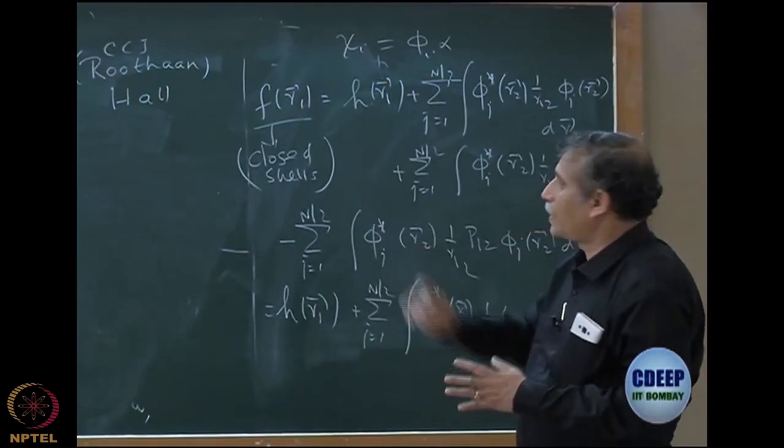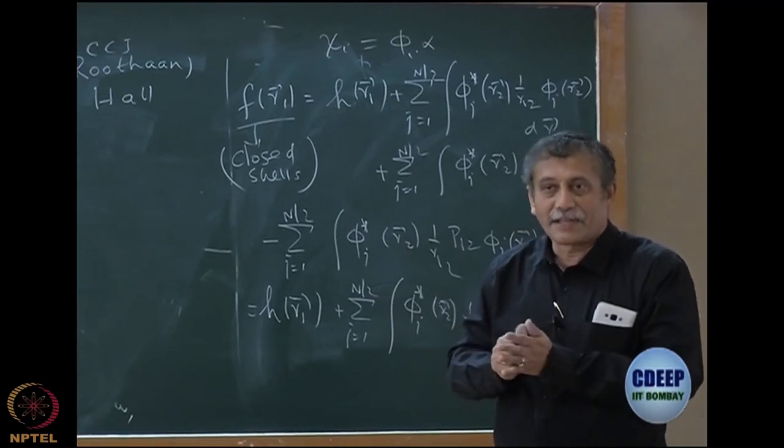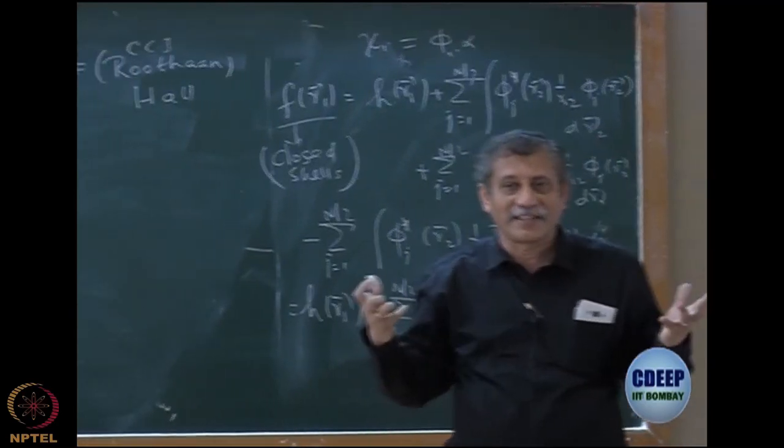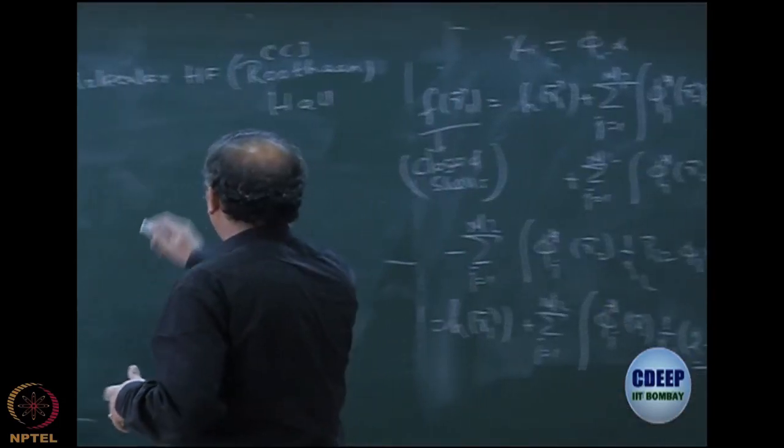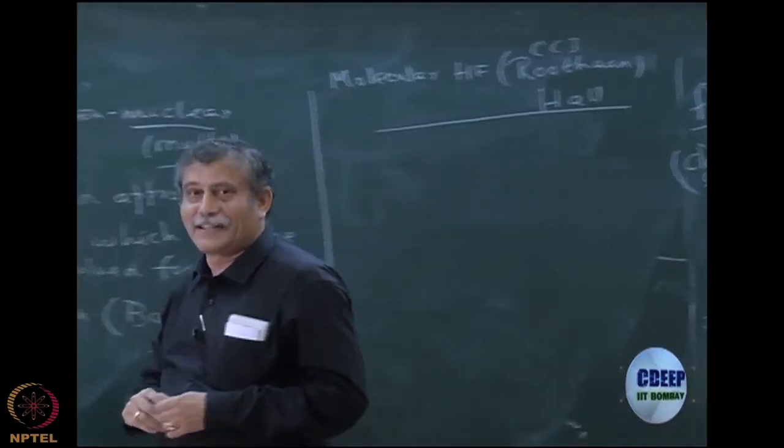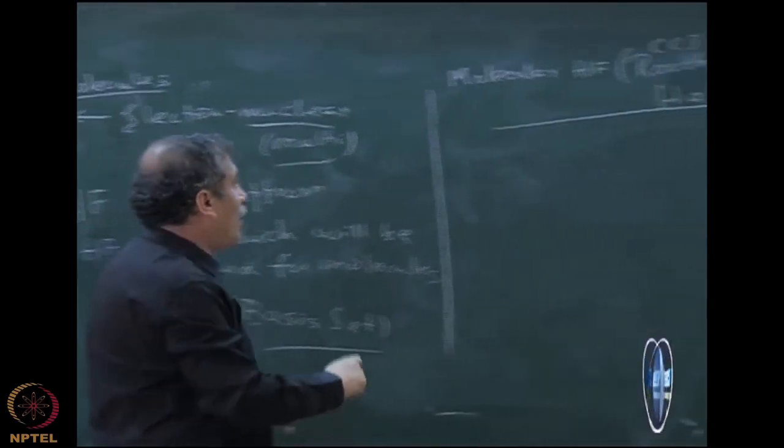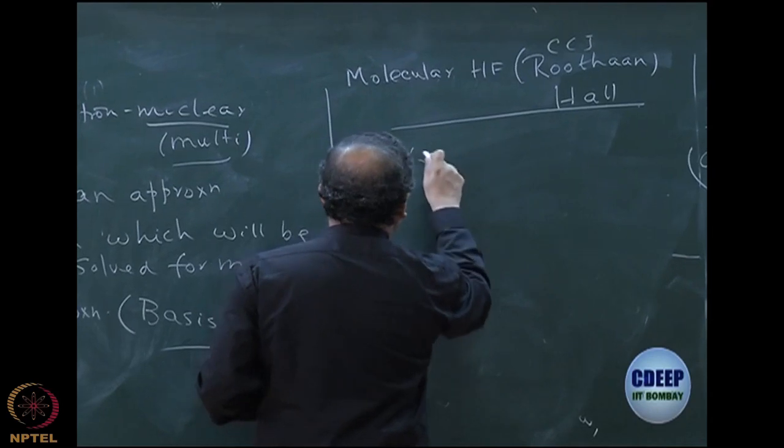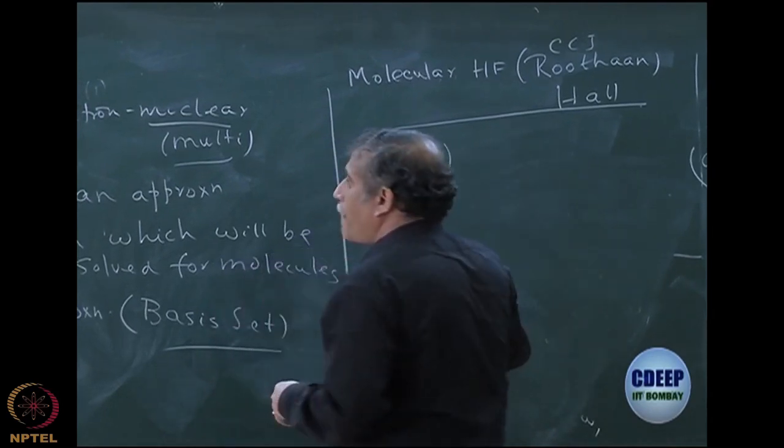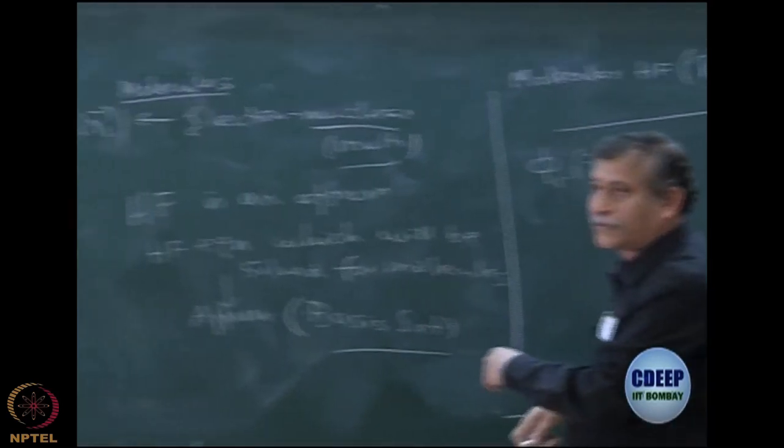You will not worry about it right now, let us worry about only Roothaan-Hall equations. It is very important to know the history. So what Roothaan proposed is that since I cannot solve this, let me expand this phi I of R1 as a linear combination of basis.